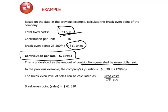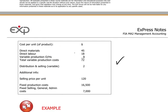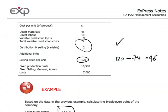In the previous example, the CS ratio would be calculated as the contribution equal to selling price $120 minus variable costs of $74, which gives us $46. So for every dollar of sale, if we sell one unit for $120, we get $46 of contribution. Dividing $46 by $120 gives us 0.38 — that is $0.38 for every dollar of sale.